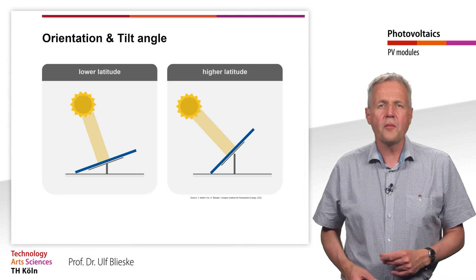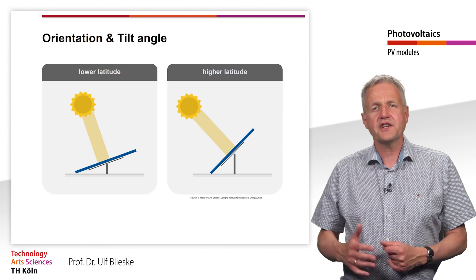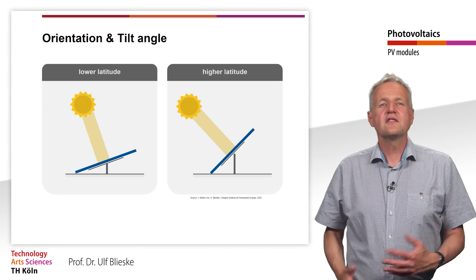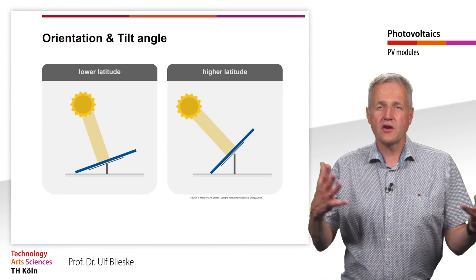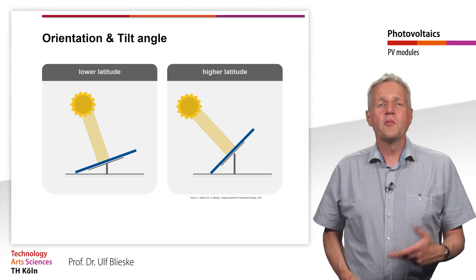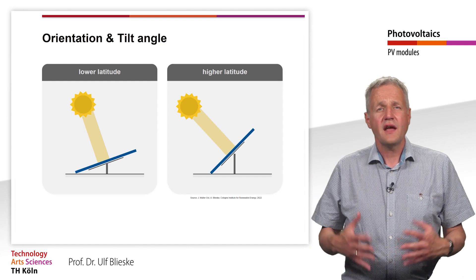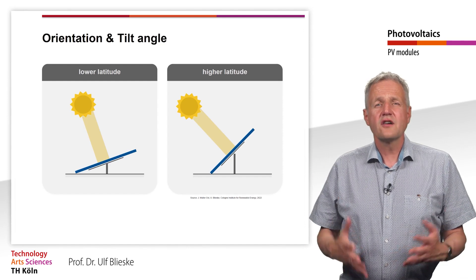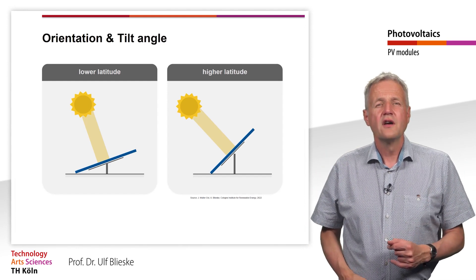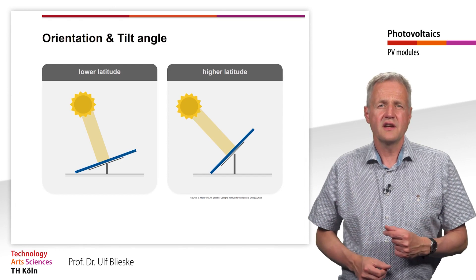For the system yield, it would of course be optimal to install the modules on two-axis solar trackers and track the sun all year round. In this case, there is no need to worry about the optimal orientation and tilt angle. However, usually the modules are installed with a fixed orientation and tilt angle, as solar trackers are expensive and require a lot of maintenance. So let's look at how we can optimize orientation and tilt.